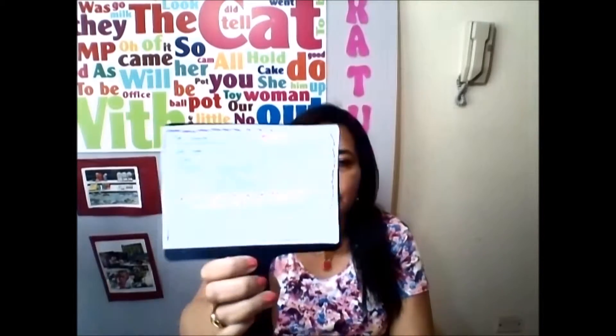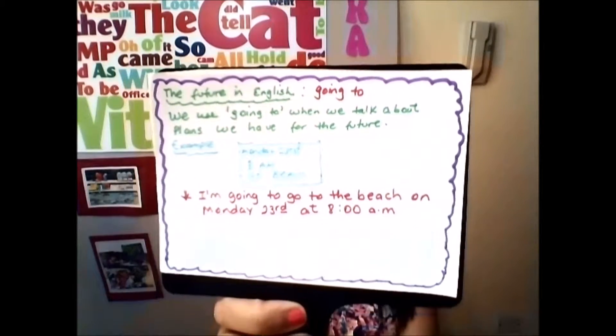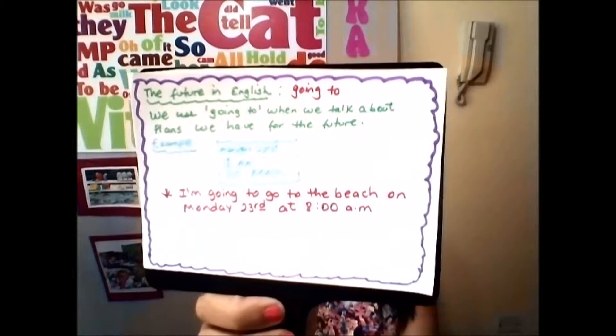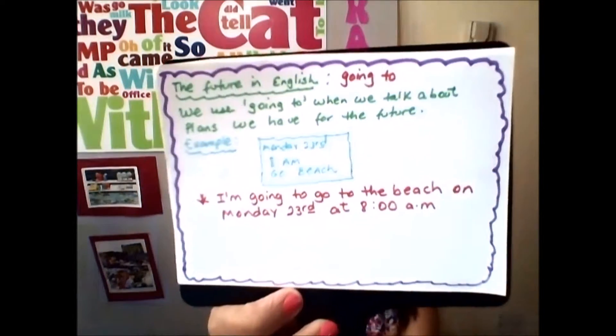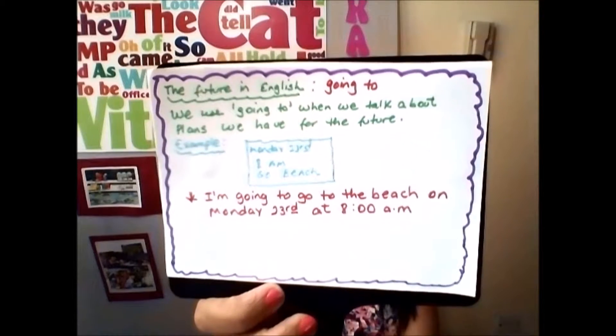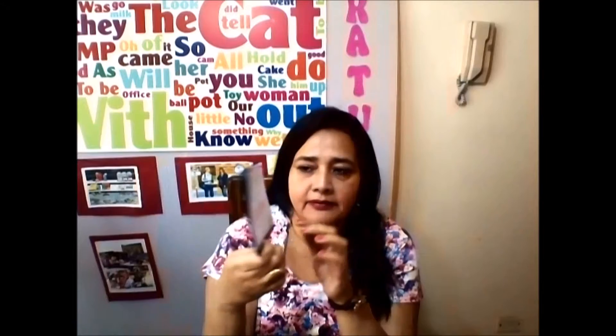Over here I have some information: 'The Future in English — Going To'. We use 'going to' when we talk about plans that we have for the future. And here you can see one day from an agenda as an example — Monday 23rd, lunes 23.